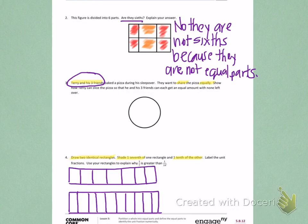And there's my tenths. Next, I'm going to shade 1/7th and 1/10th. It then tells me that I need to label my unit fractions. Unit fraction is words. So this is 1/7th, and this is 1/10th.